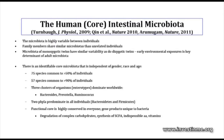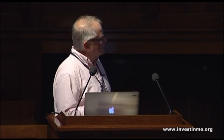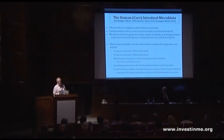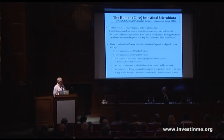We can organize these into enterotypes: Bacteroides, Prevotella, and Ruminococcus are the three clusters used to identify three core groups present throughout the world in all populations. Two phyla predominate in all individuals: Bacteroidetes and Firmicutes. The functional core — the reason for this conservation of species — is that they produce gene products essential for our health: involved in degrading complex carbohydrates, providing short-chain fatty acids, vitamins, and essential amino acids that we can't produce ourselves.